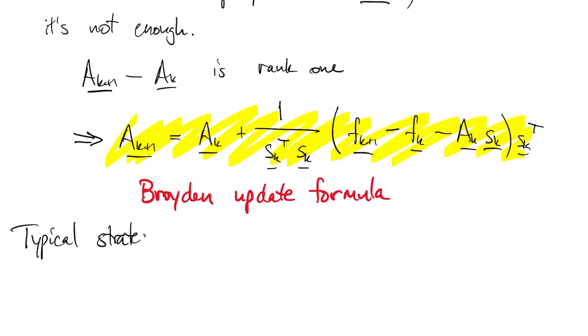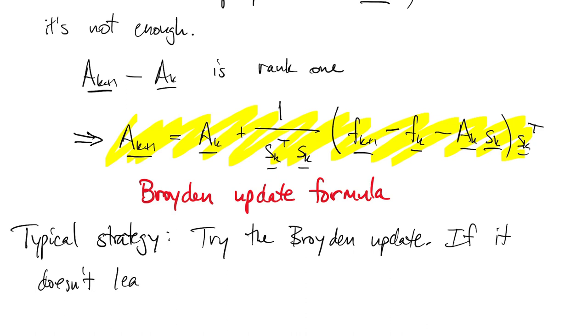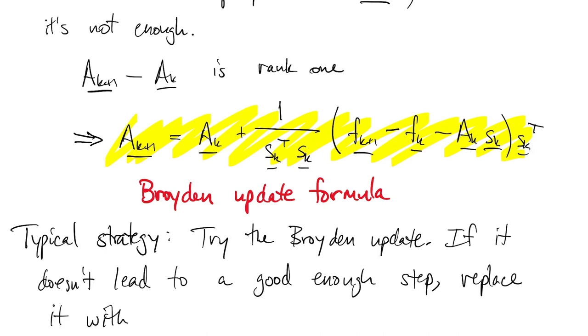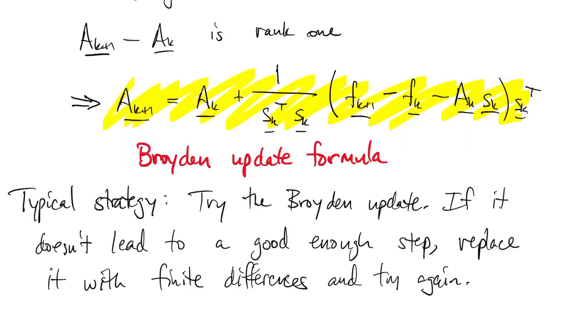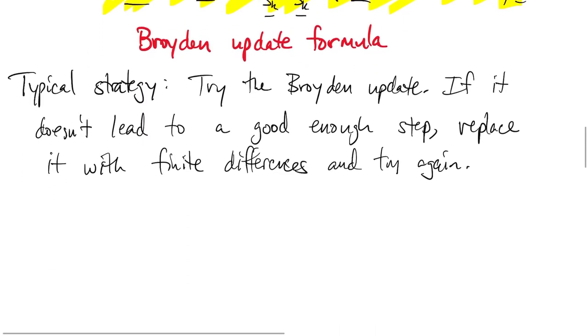Typically, we try the Broyden update and use it to find the next Newton step. If it doesn't lead to a good enough step, we replace the Jacobian approximation with a finite difference approximation, which is slower. Using the Broyden updates is very advantageous: it doesn't require extra evaluations of f, and we don't have to write code for the Jacobian. We do pay a price just like with the secant method — convergence drops from quadratic to something which is still super-linear.